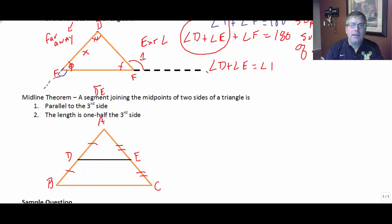Well, DE then must be parallel to the third side. So DE is parallel to BC. That's one of our properties.